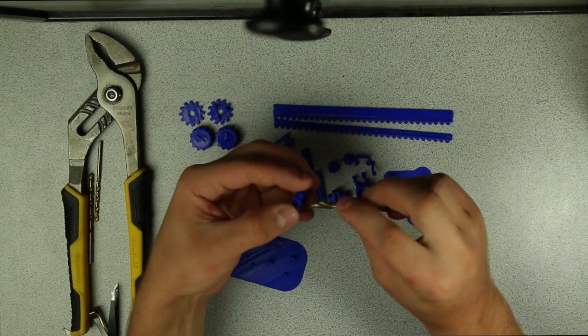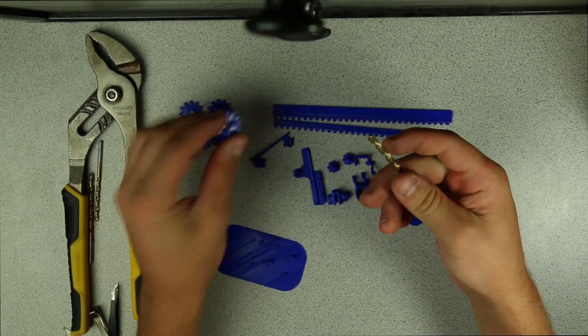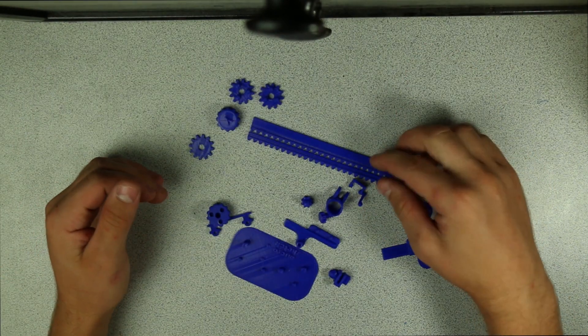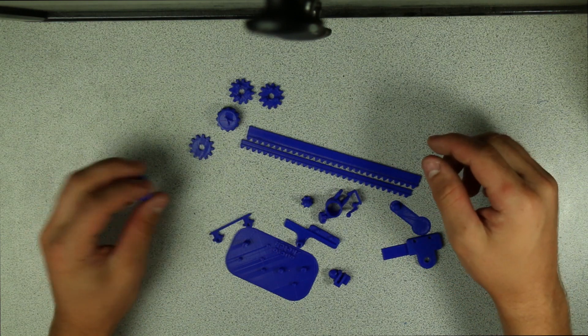So what I'm going to do is I'm going to use drill bits to ream out the holes in these things so that they'll fit. Alright, so that's all done, so now we're going to actually work on the assembly.